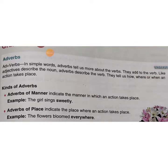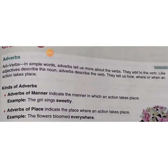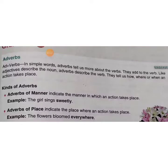In simple words, adverbs tell us more about the verbs; they add to the verbs. Like adjectives describe the noun, adverbs describe the verbs. They tell us how, where, or when an action takes place. So another definition: words that tell how an action is done are called adverbs — vohe shabd jo hume batate hain ki koi action kis tarike se kiya gaya, woh adverb hai.